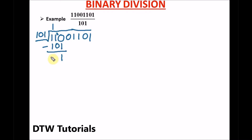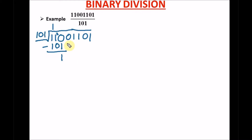We are left with 0, and 0 minus 0 is 0, and 1 minus 1 is 0. So the result of that subtraction is 0 0 0. I've also treated the topic of number bases on my channel — subtraction, addition, multiplication, and division of number bases. Now we drop down the next digit, which is 0. Can 101 go into 10? No, so we put down a 0 in the quotient.